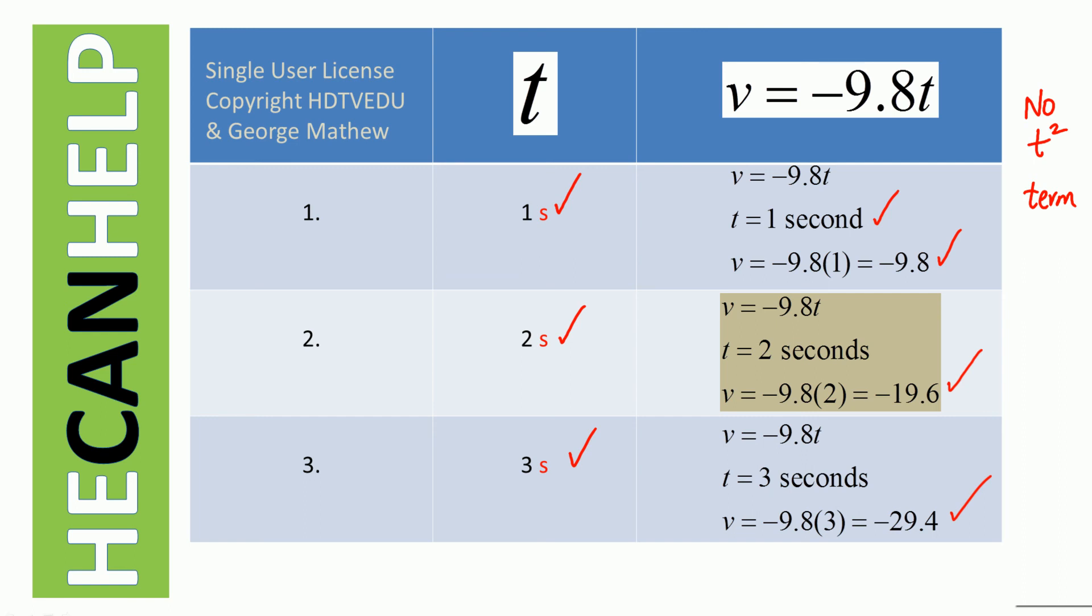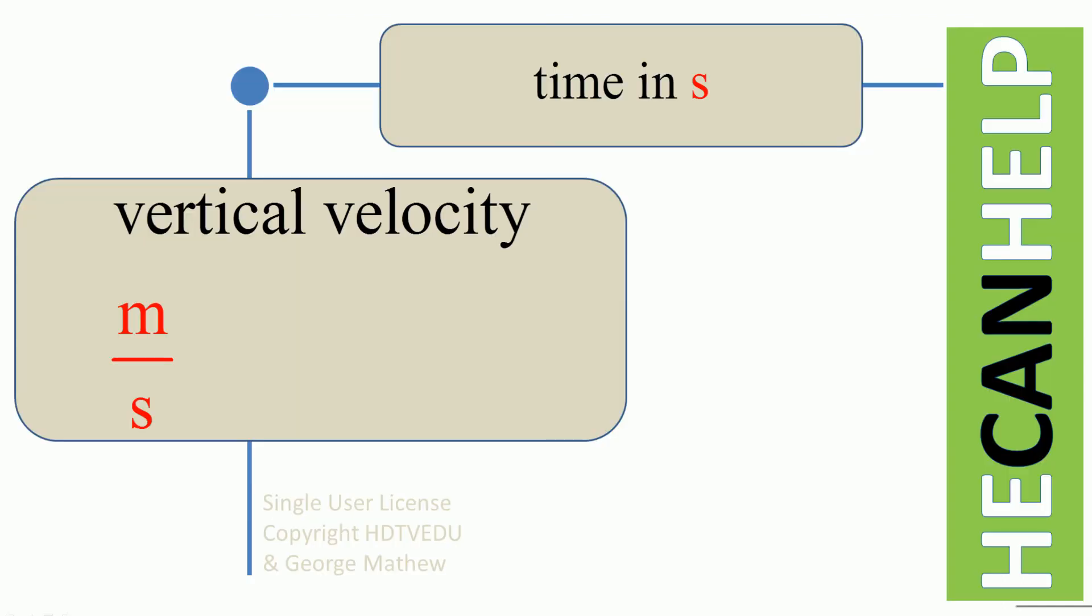So the next thing is plot. One, negative 9.8. Two, negative 19.6. Three, negative 29.4. And when we plot that, we expect it to be a straight line passing through the origin. Please don't forget, it is on its way down, so we expect the velocity to be negative.